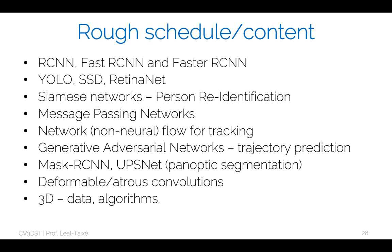We will cover famous architectures you've probably heard about — FasterRCNN, YOLO, RetinaNet. We'll cover person re-identification through Siamese networks, graph neural networks in the form of message passing networks, and generative adversarial networks for trajectory prediction. Finally, we'll move to the mask segmentation domain with Mask RCNN, OSVOS, introducing techniques like deformable convolutions, and go to the 3D domain.